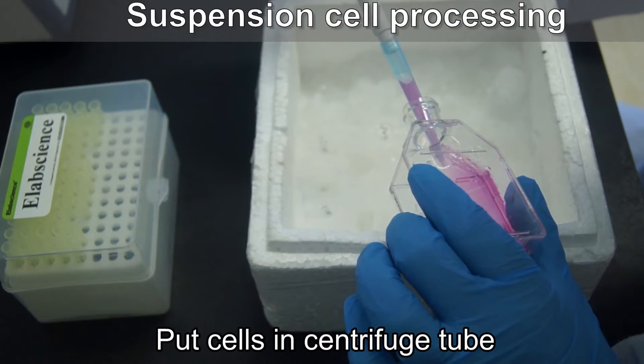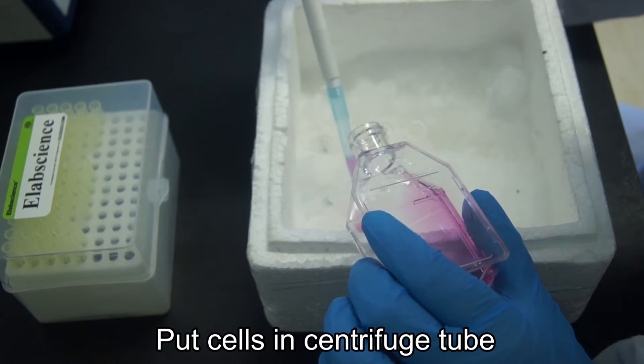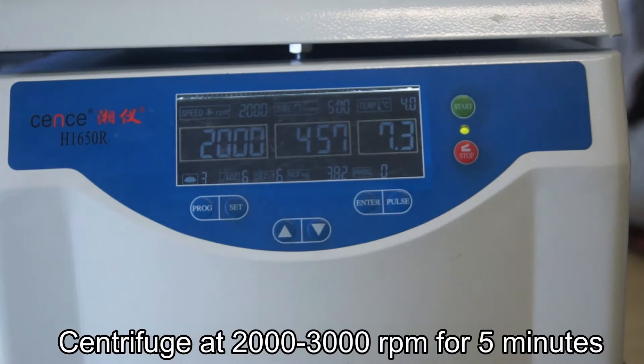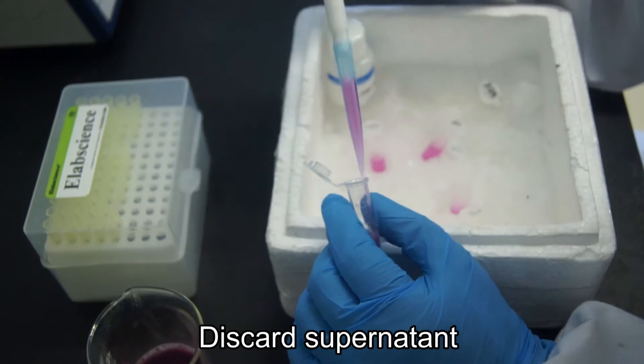Suspension cell processing: Transfer the cells into a pre-cooled centrifuge tube. Centrifuge at 2,000 to 3,000 RPM for 5 minutes at 4 degrees centigrade. Then discard the supernatant.